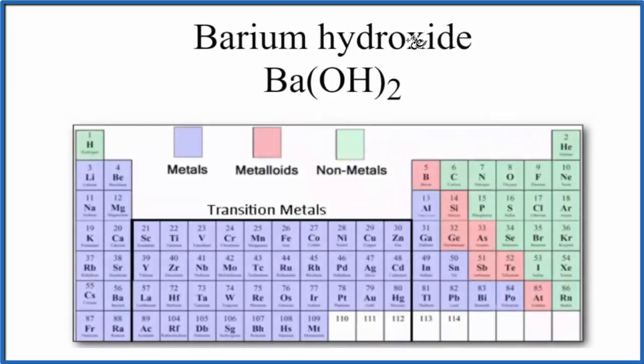In this video, we'll look at whether barium hydroxide, this is Ba(OH)2, is ionic or covalent. So what we're looking at is the bond between the barium and then this hydroxide group. This is a polyatomic ion.